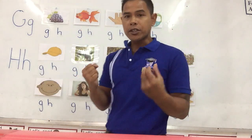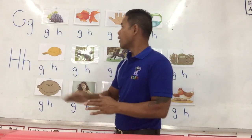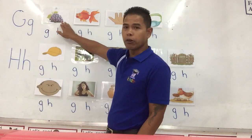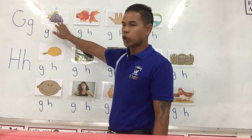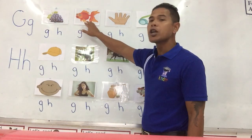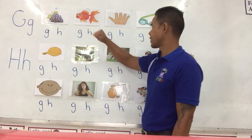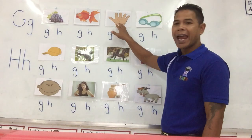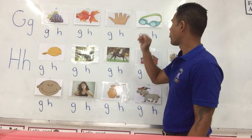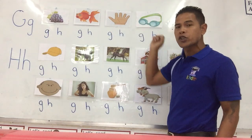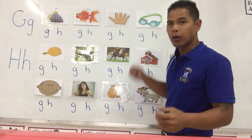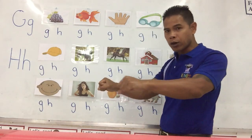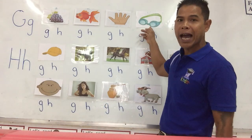Let's look at some of the pictures that start with the letter G or the letter H. The first picture over here is the fruit — we call it grape. Next one is goldfish. Hand. Goggles — goggles is something you wear on your eye when you go swimming or when you go on a motorcycle ride.